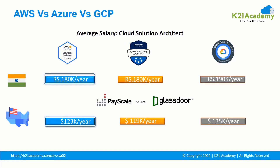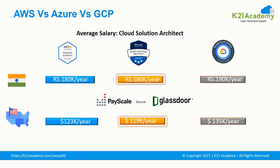According to Payscale and Glassdoor, the average salary of an AWS Solution Architect in India is 180K INR per year and 123K USD per year in the USA. For an Azure Solution Architect, the salary in India is 180K INR per year and 119K USD per year in the USA. For a Google Cloud Engineer, it is 190K INR per year in India and 135K USD per year in the USA.